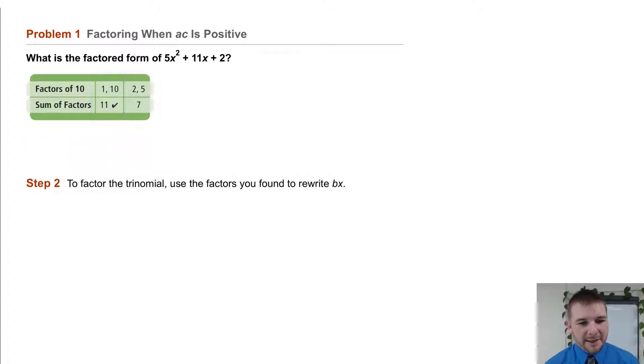Done. Step 2. To factor the trinomial, use the factors you found to rewrite b times x. So we'll write this, 5x² + 11x + 2, as 5x² + 1x + 10x + 2.